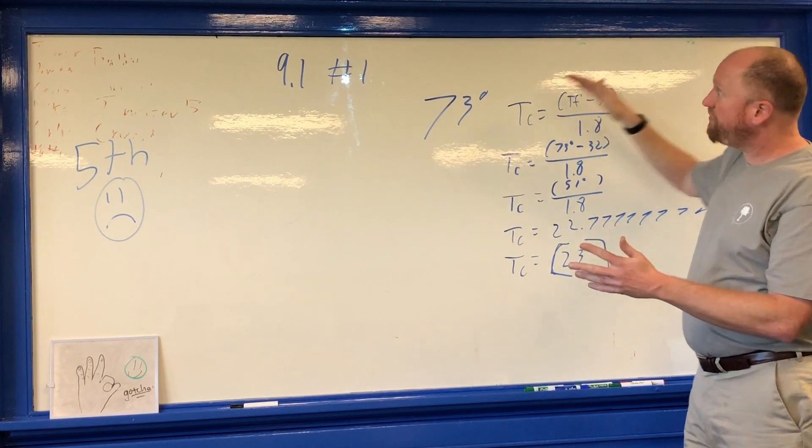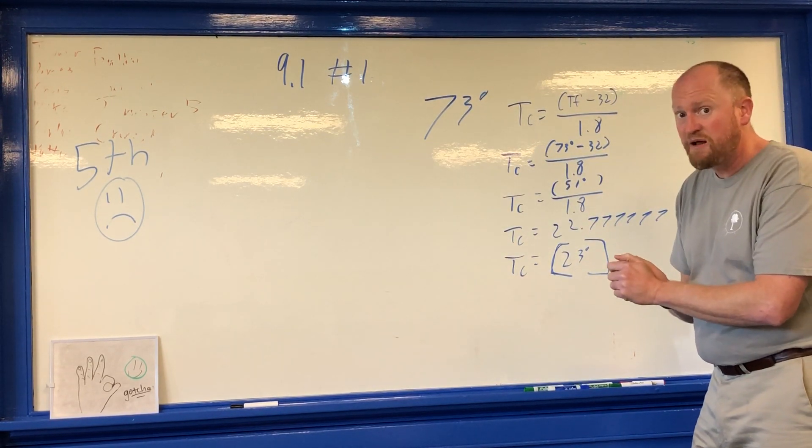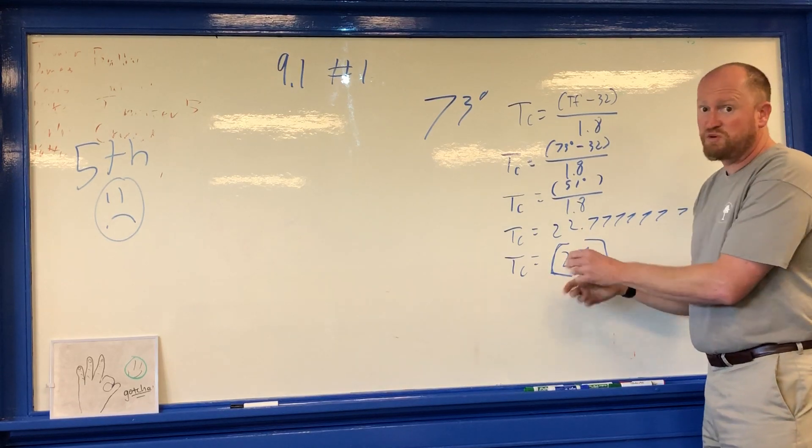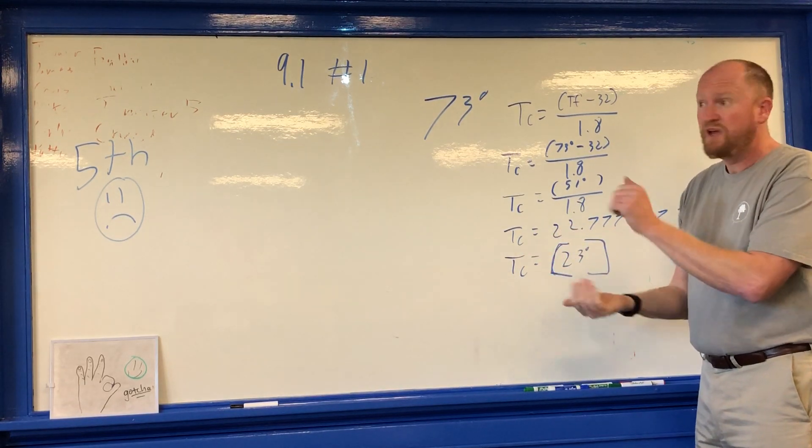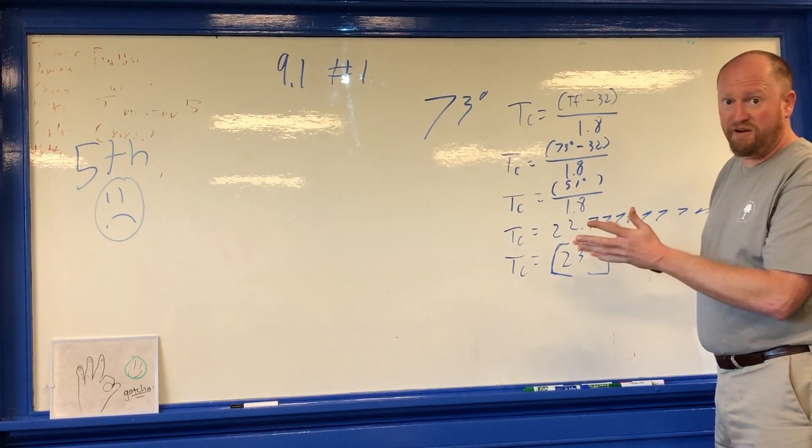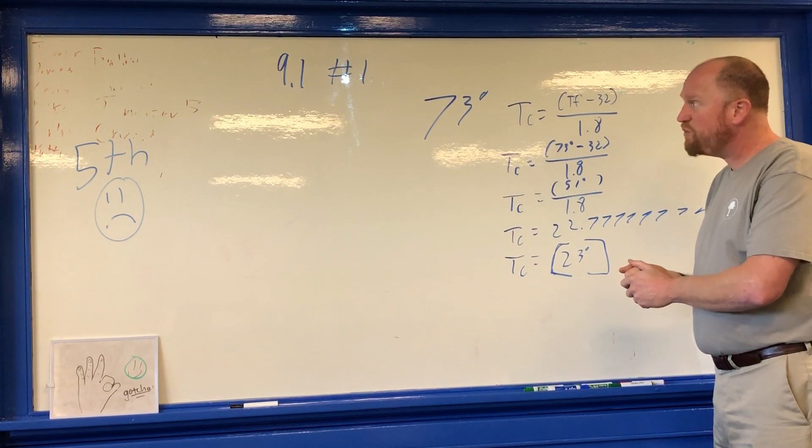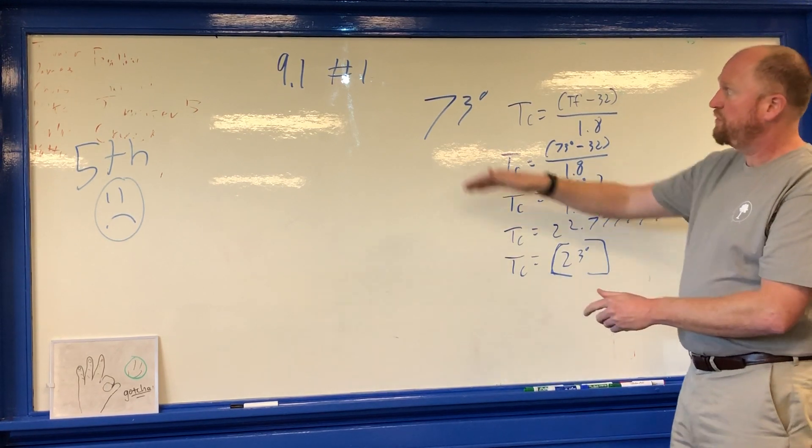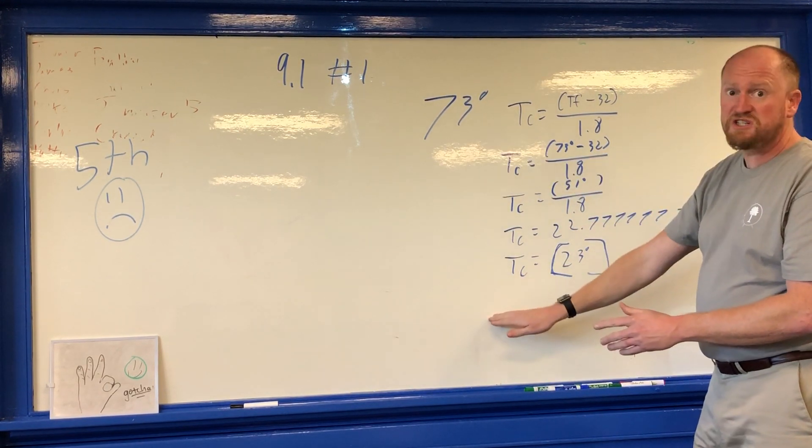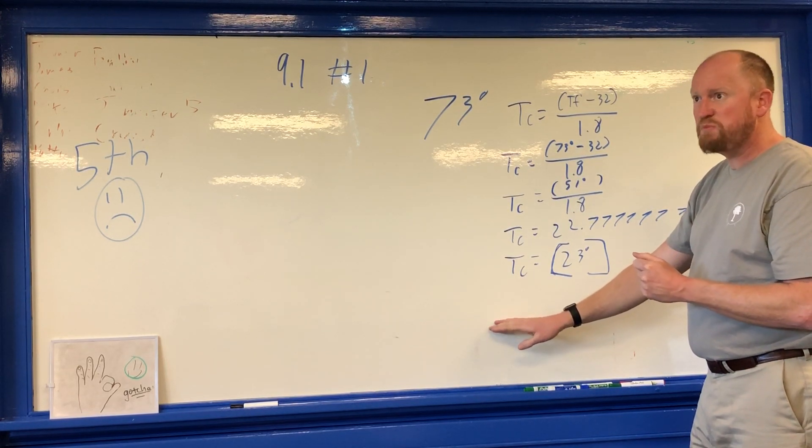So whenever you're going from Fahrenheit to Celsius, you should expect that your answer will be less, both because Celsius degrees are bigger, so you don't take as many. Also because Fahrenheit at freezing, you're already 32 degrees in with Fahrenheit. So no matter what, expect that when you convert Fahrenheit to Celsius, you're going to get a smaller number.